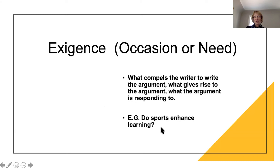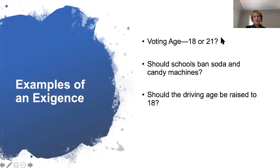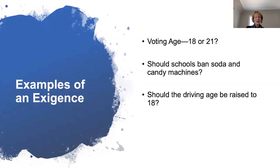Here's an example: Do sports enhance learning? Many of you probably play sports, but do sports enhance learning or do they detract from learning? That might be the exigence about which you could write a paper. Here are some more examples: Should the voting age be changed — currently 18, raised to 21, or lowered? How about soda machines and candy machines in schools — should they be banned? Or the driving age: in California people can drive at 16. Should it be raised to 18? Those are examples of an exigence.